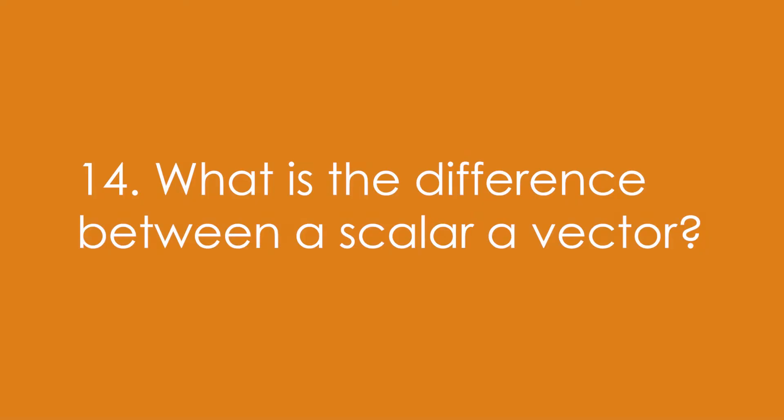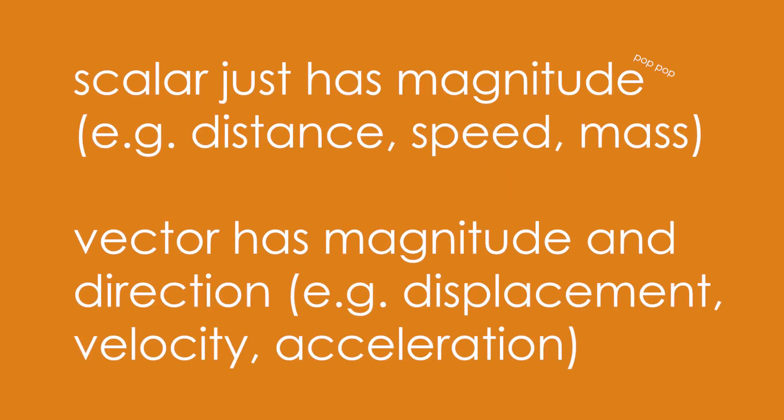14. What is the difference between a scalar and a vector? A scalar just has magnitude, that is a number, e.g. a distance, speed or mass. A vector has a magnitude and direction, like displacement, velocity and acceleration. Force as well.